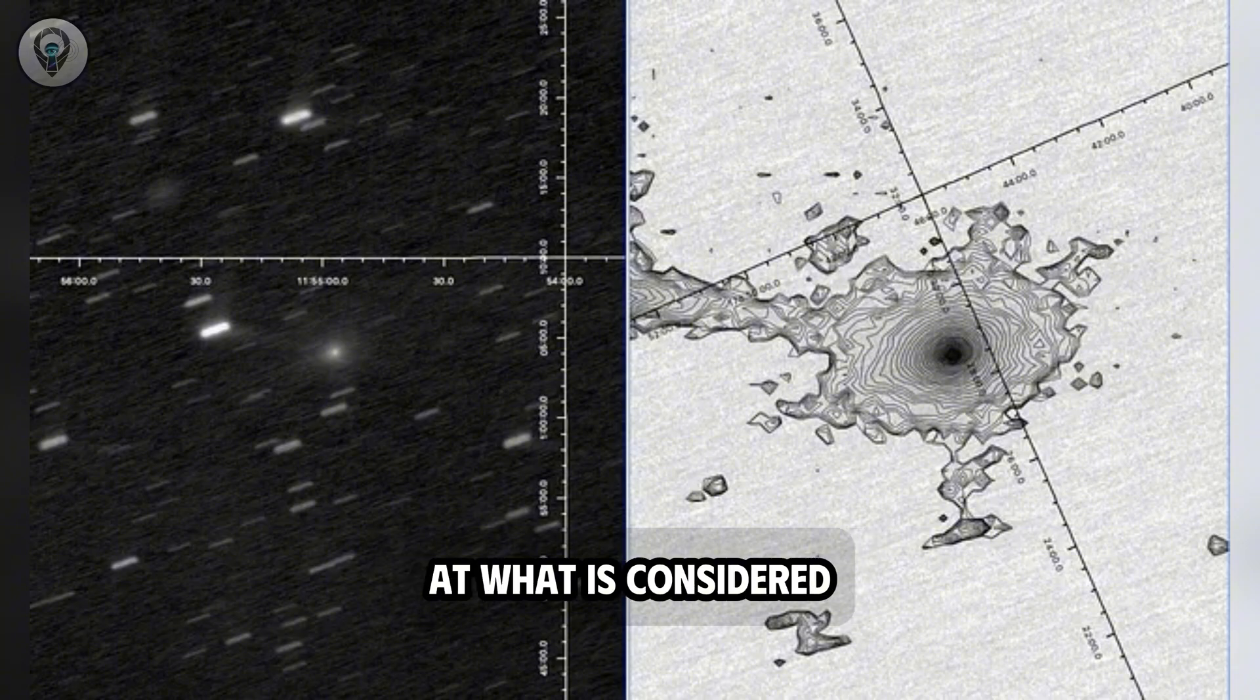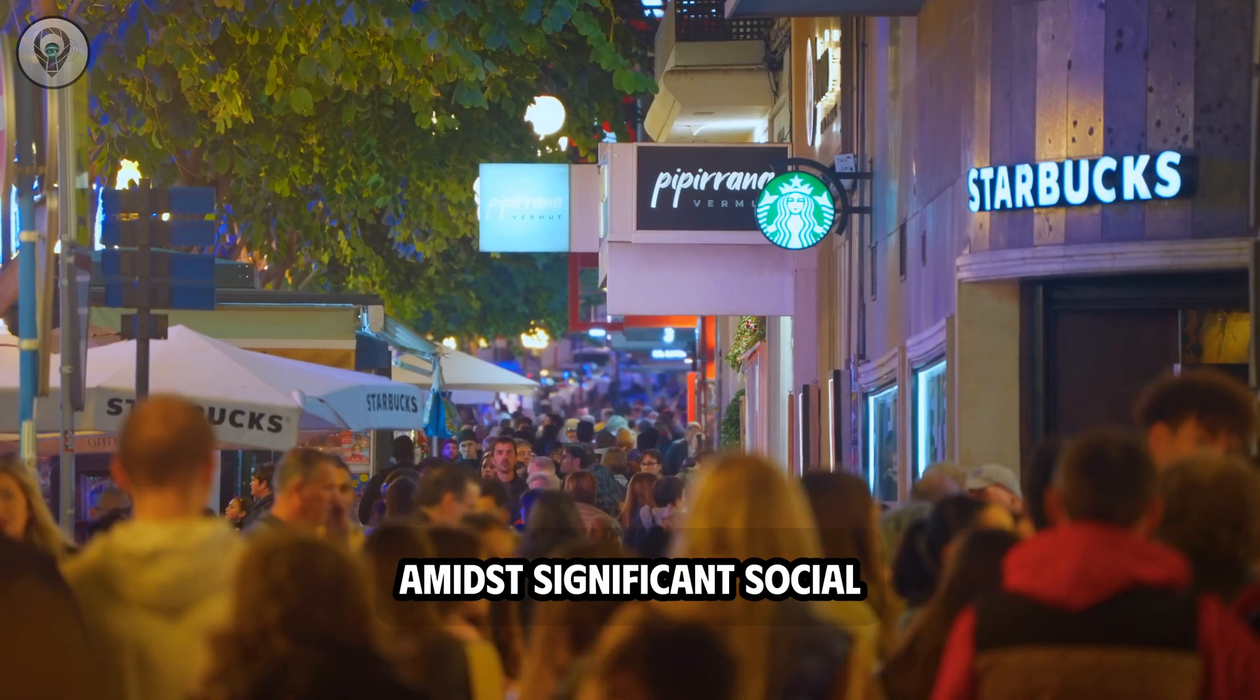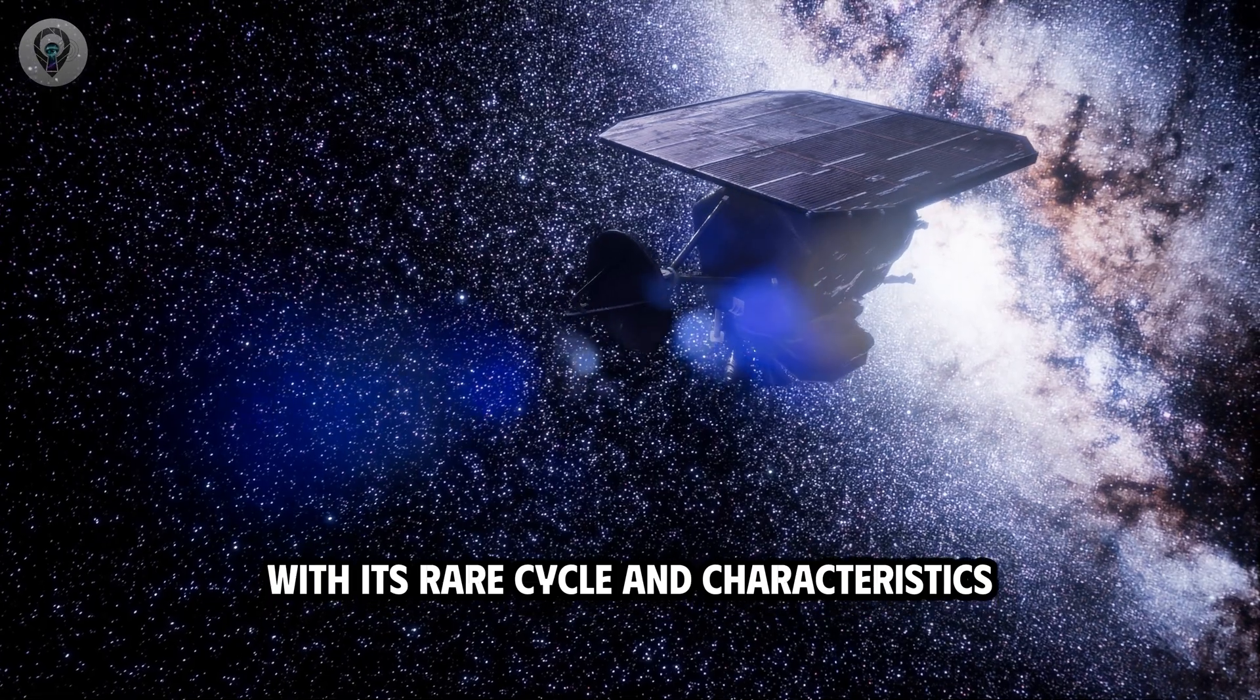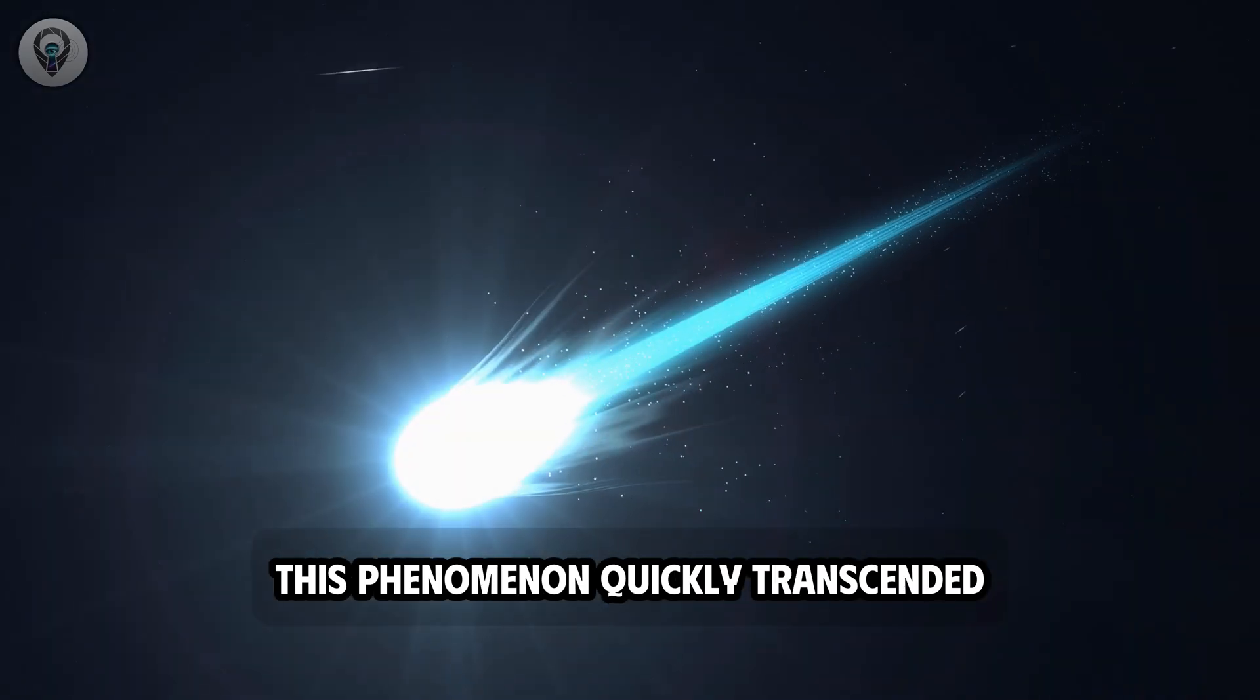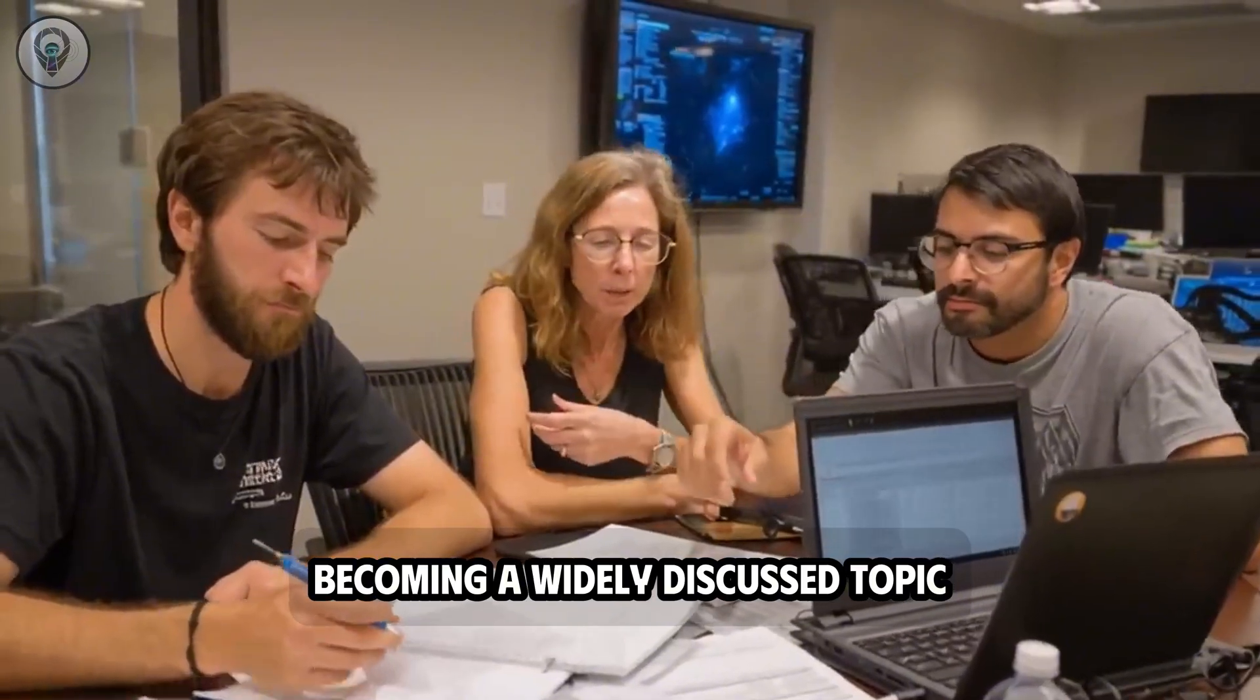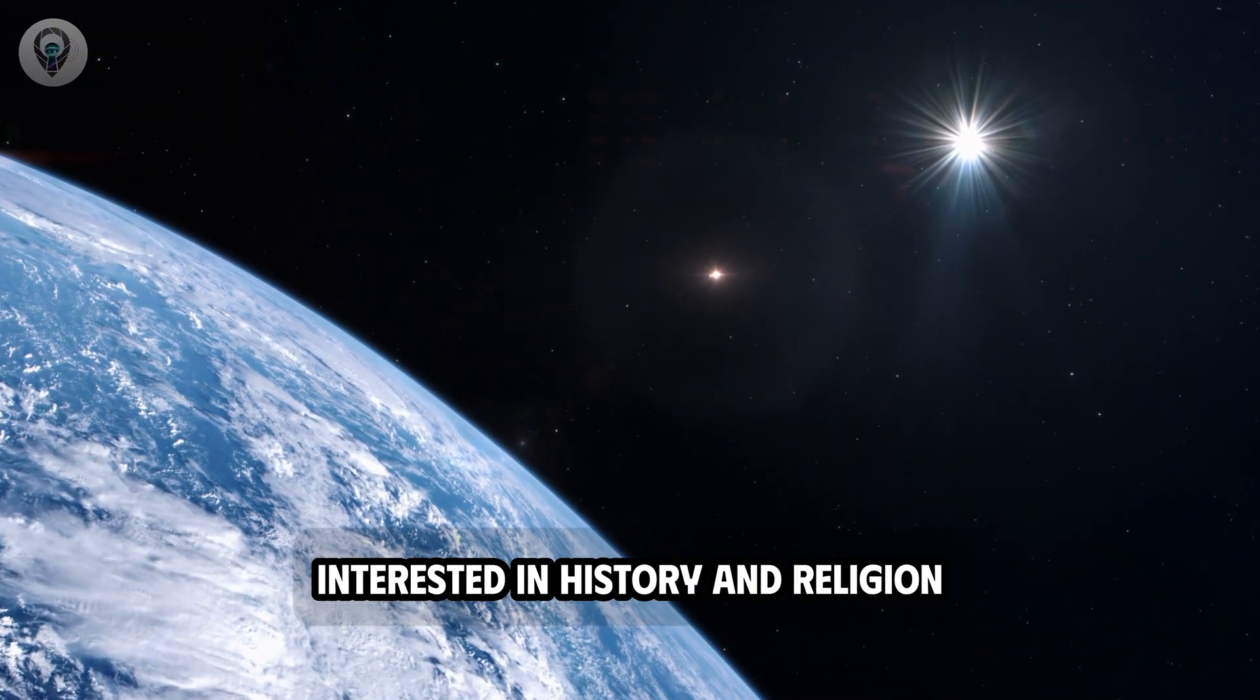The 3i Atlas appeared at what is considered a sensitive time in contemporary history, amidst significant social, technological, and religious upheavals in the world. With its rare cycle and characteristics that compelled close scrutiny from scientists, this phenomenon quickly transcended the realm of a typical astronomical discovery, becoming a widely discussed topic not only among experts, but also among the general public interested in history and religion.